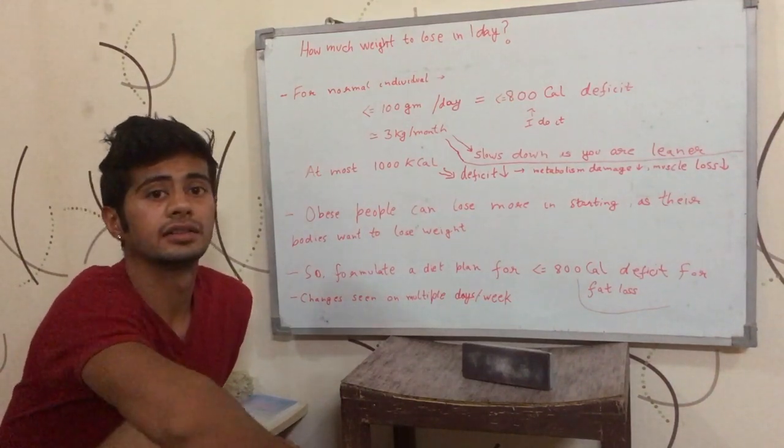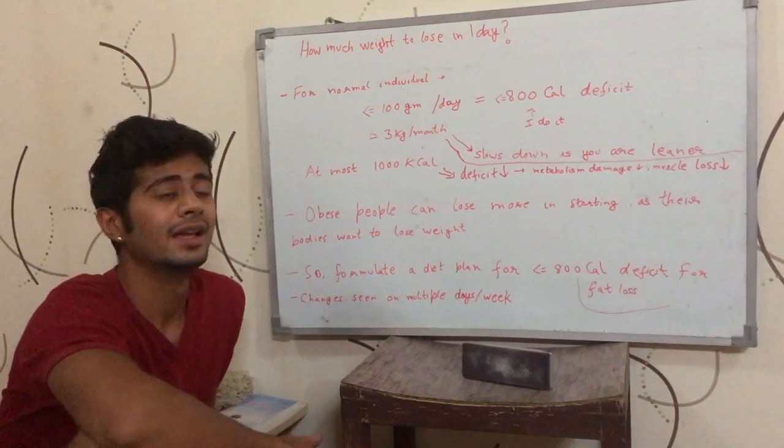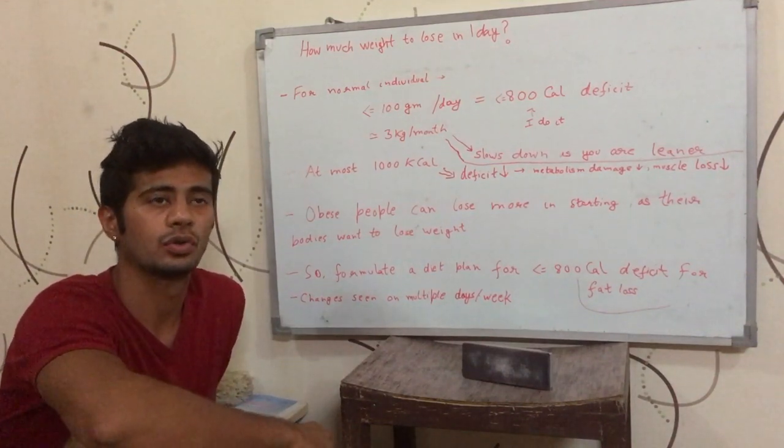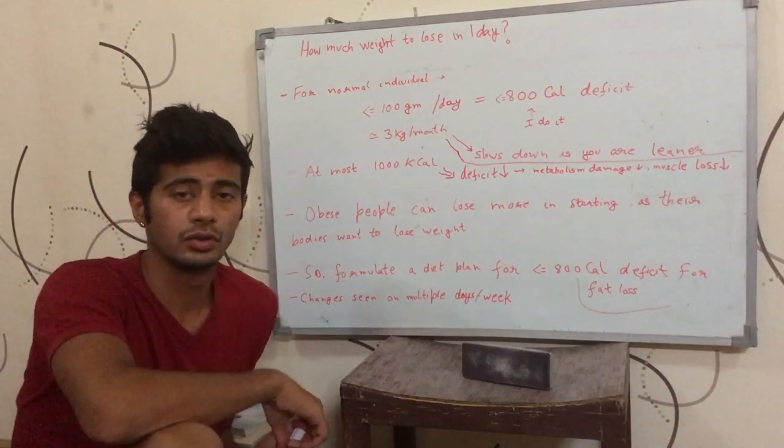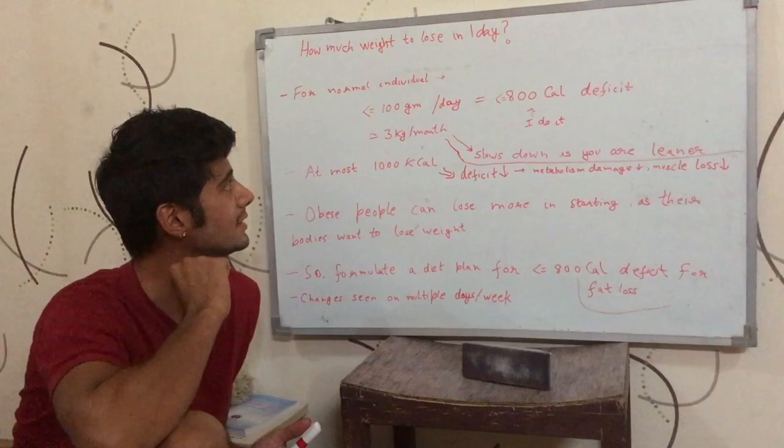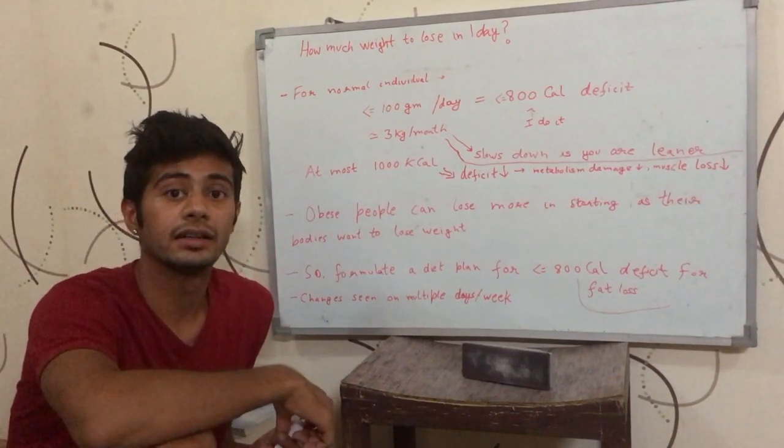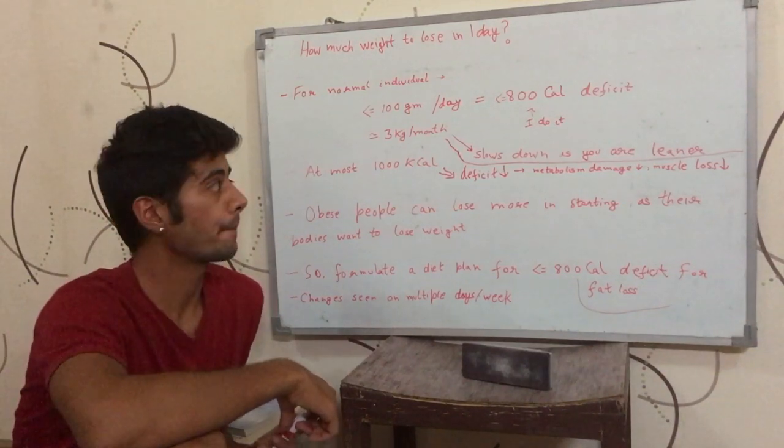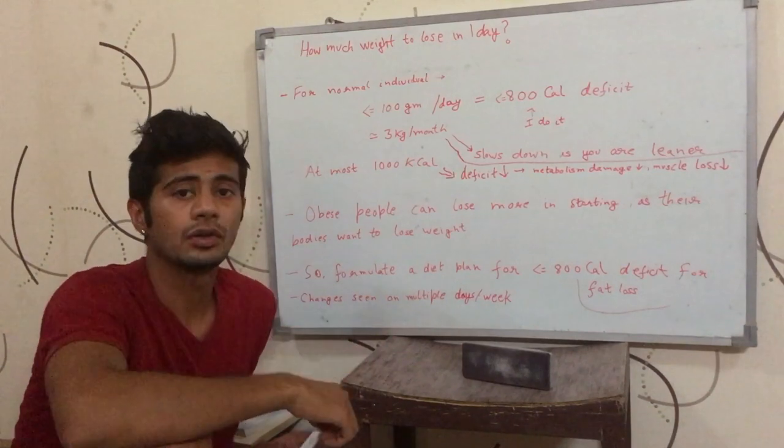Hey hi guys, this is Sushant Kochar. Today we are going to talk about how much weight you should be losing in one day, how much weight loss you should be targeting for one day. And the answer is about 100 grams per day, which would be like 3 kilograms per month.